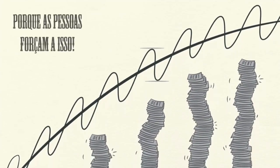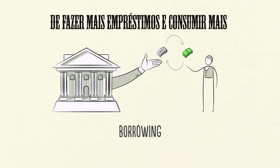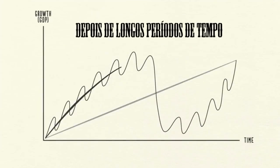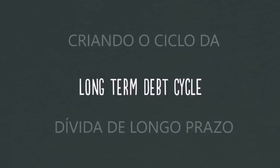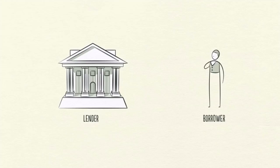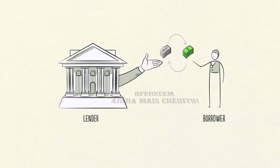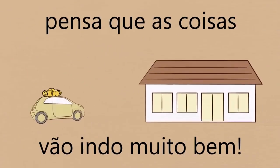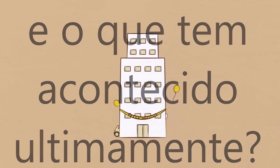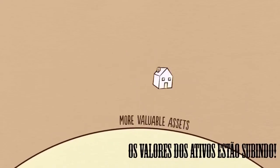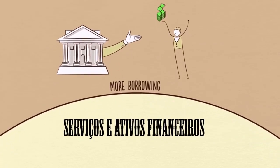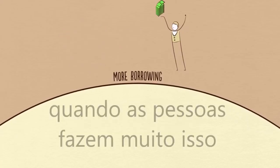Why? Because people push it — they have an inclination to borrow and spend more instead of paying back debt. It's human nature. Because of this, over long periods of time, debts rise faster than incomes, creating the long-term debt cycle. Despite people becoming more indebted, lenders even more freely extend credit because everyone thinks things are going great. Incomes have been rising, asset values are going up, the stock market roars — it's a boom. It pays to buy goods, services, and financial assets with borrowed money. When people do a lot of that, we call it a bubble.